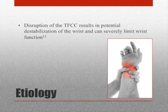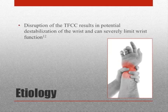Since the TFCC is considered the primary stabilizer of the DRUJ, disruption results in potential destabilization of the wrist and can severely limit wrist function.